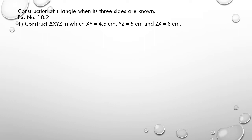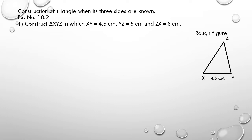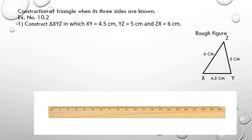First question: construct triangle XYZ in which XY is equal to 4.5 centimeter, YZ is equal to 5 centimeter, and ZX is equal to 6 centimeter. For this we must draw a rough figure. Let's draw a rough figure, name it as X, Y, and Z, and mark the given measurements: XY = 4.5 cm, YZ = 5 cm, and ZX = 6 cm.